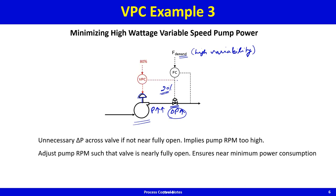A smart operator measures the valve position and, if it is not say 80% open, reduces the RPM. You have a valve position controller that compares the valve position with a nearly-fully-open set point. If the valve is less than 80% open, the VPC reduces RPM. If the valve position goes above 80%, RPM is increased — so this is a direct-acting controller.